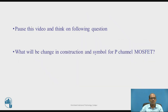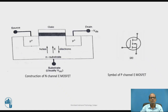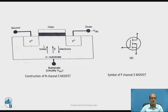Pause this video and think on the following question: what will be the change in the construction and symbol for the P-channel MOSFET? For the P-channel MOSFET, the layers — that is substrate, drain, and source — are changed. And in the symbol, the arrow is pointed towards the outside. This is a P-channel MOSFET.